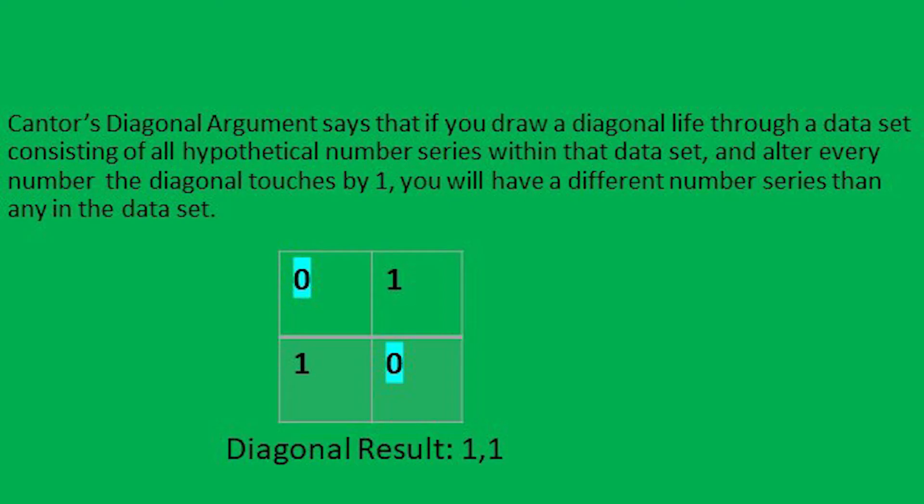Cantor's diagonal argument is actually used in a bunch of other different mathematical proofs based on similar logic. For the example shown in this video, I'm using a very simple dataset consisting of integers 0 and 1, and the series is exactly two integers wide. The result of taking a diagonal through the number series 0,1 and 1,0 produces the diagonal result of 1,1.